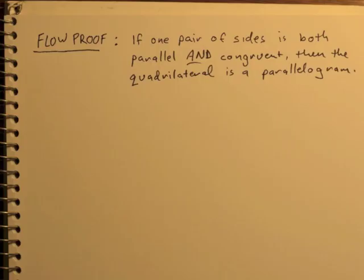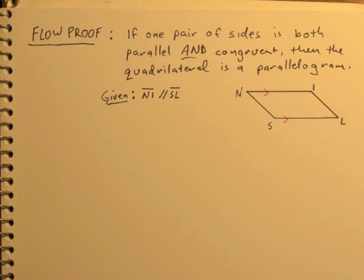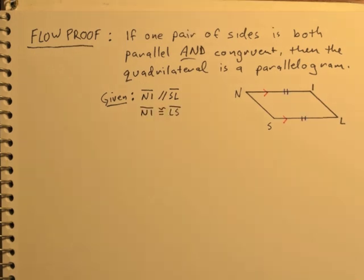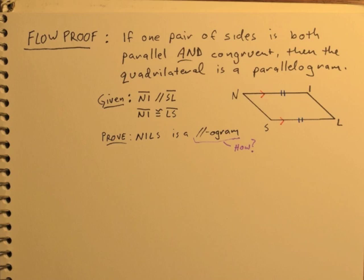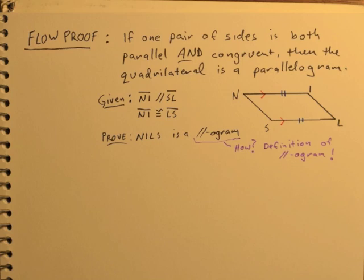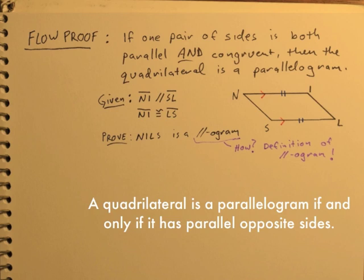Now let's take a look at a flow-proof example. Let's say we want to prove: if one pair of sides is both parallel and congruent, then the quadrilateral is a parallelogram. We know this theorem is true, but we want to prove it. We're dealing with a parallelogram where NI is parallel to LS and also congruent. The definition of a parallelogram is that a quadrilateral has parallel opposite sides. We've already proven one pair of parallel sides — we need to somehow prove that NS is parallel to IL.